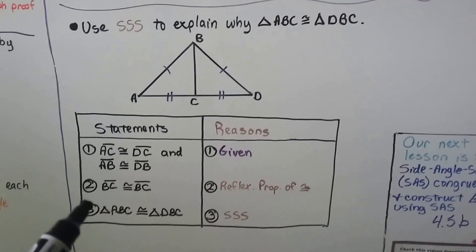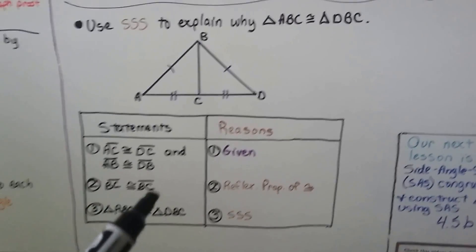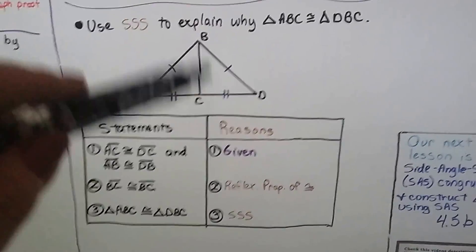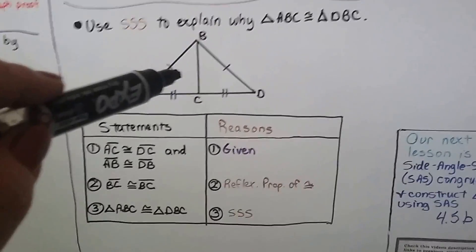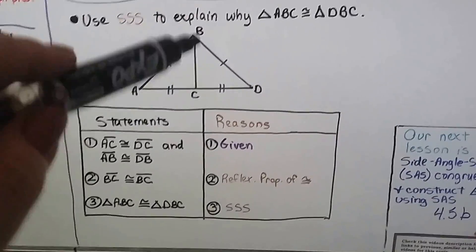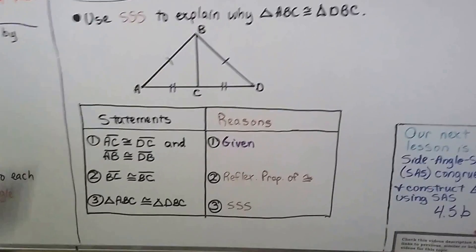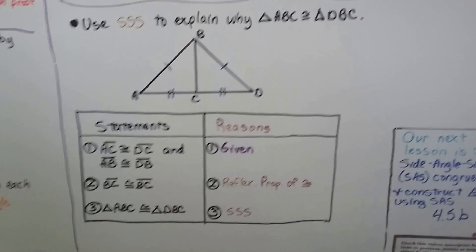Step 2 says segment BC is congruent to BC. The BC used in this triangle is congruent to the BC used in this triangle. That's the reflexive property of congruence.